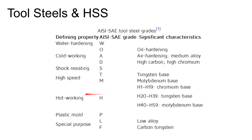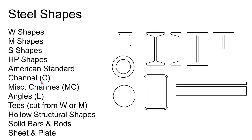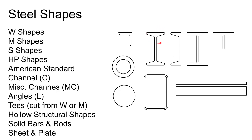Steel is available in a variety of shapes. Plain carbon steel is available in pretty much any of the shapes shown here. W shapes, M shapes, and S shapes may look similar — the S shape is a standard I-beam (standard structural steel). W shapes are wide-flange beams with wider flanges than S shapes. M shapes have an identical look but are miscellaneous shapes that don't fit the standard wide-flange beam dimensions.